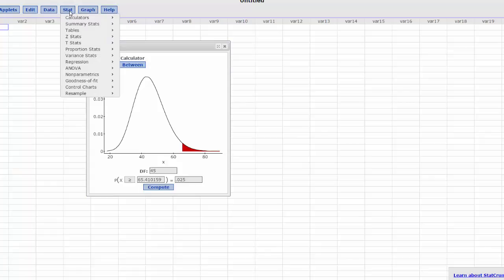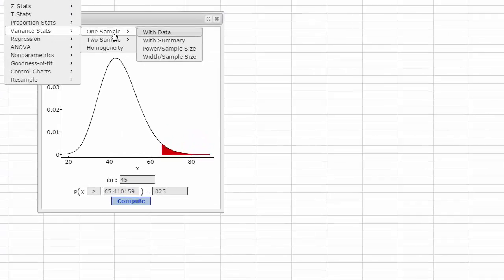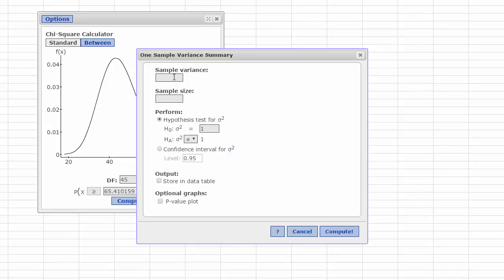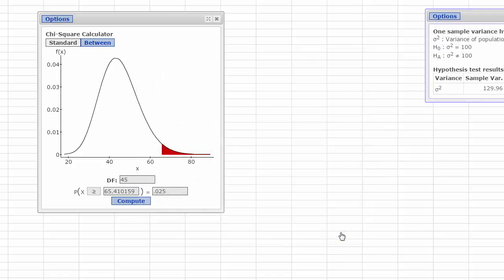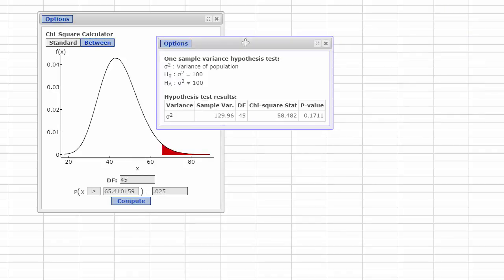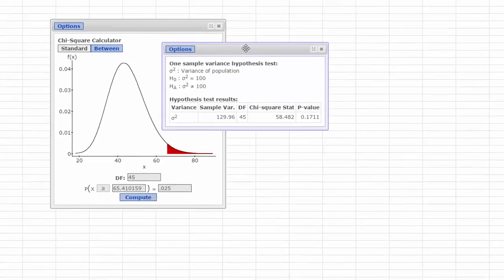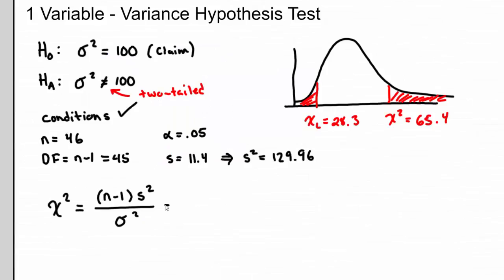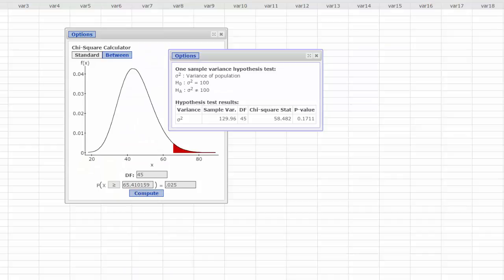So if I go into StatCrunch, I can go stat, variance, stats, one sample, and I have a summary. What's my sample variance, which we were just talking about? That's 129.96. Sample size was 46. Again, see how it says sigma-squared there? So again, StatCrunch only uses variance. And alternative is not equal, so that is correct. So there it is. Our chi-squared stat, in other words, our test statistic is 58.482. So this is going to be equal to 58.482. By the way, our p-value, it tells us, what was our p-value there? 0.1711.